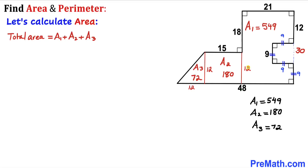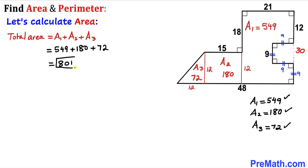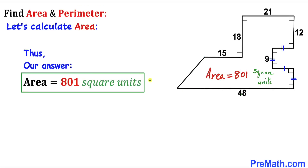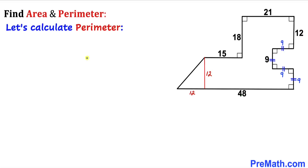The total area of the whole shape is the sum of A₁, A₂, and A₃. Adding 549 plus 180 plus 72 gives us 801 square units. Thus the area of this given shape turns out to be 801 square units.